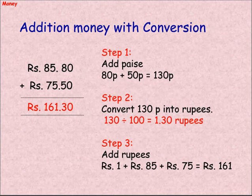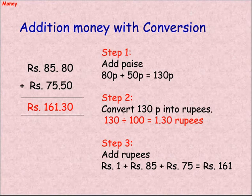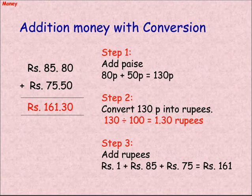Addition of money with conversion. Rupee 85.80 plus rupee 75.50 equals rupee 161.30. Step 1: Add paise — 80 paise plus 50 paise equals 130 paise. Step 2: Convert 130 paise into rupees — 130 divided by 100 equals 1.30 rupees. Step 3: Add rupees — rupee 1 plus rupee 85 plus rupee 75 equals rupee 161.